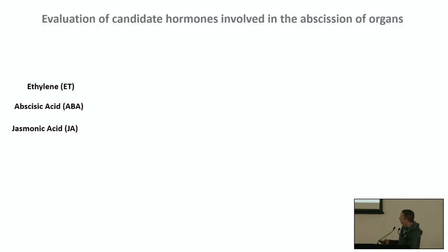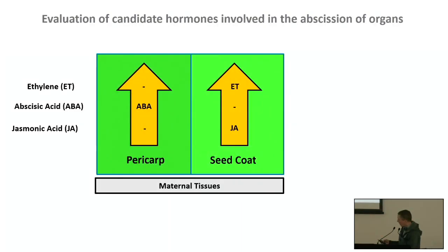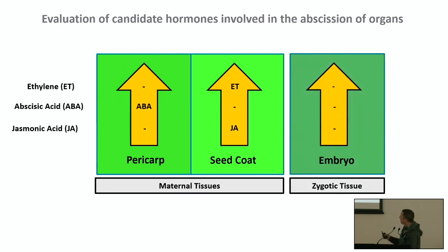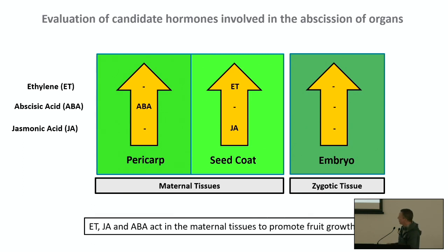We also looked at ethylene, abscisic acid, and jasmonic acid, as they've been implicated in abscission. In arresting fruits, there's a significant increase in ABA in the pericarp, while in the seed coat we see significant increases in ethylene and jasmonic acid. There's no change in these hormones in the embryo. It appears that in the maternal tissues — pericarp and seed coat — ethylene, jasmonic acid, and abscisic acid are acting to promote fruit growth arrest.